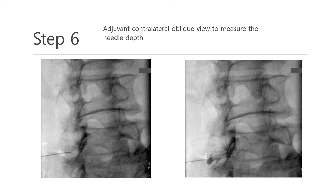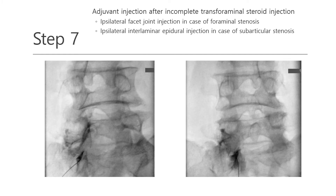I will explain more detailed anatomy later. Step 7: if I am not satisfied with the contrast pattern, I add an adjuvant target — ipsilateral facet joint injection in case of foraminal stenosis, and ipsilateral interlaminar epidural steroid injection in case of subarticular stenosis.